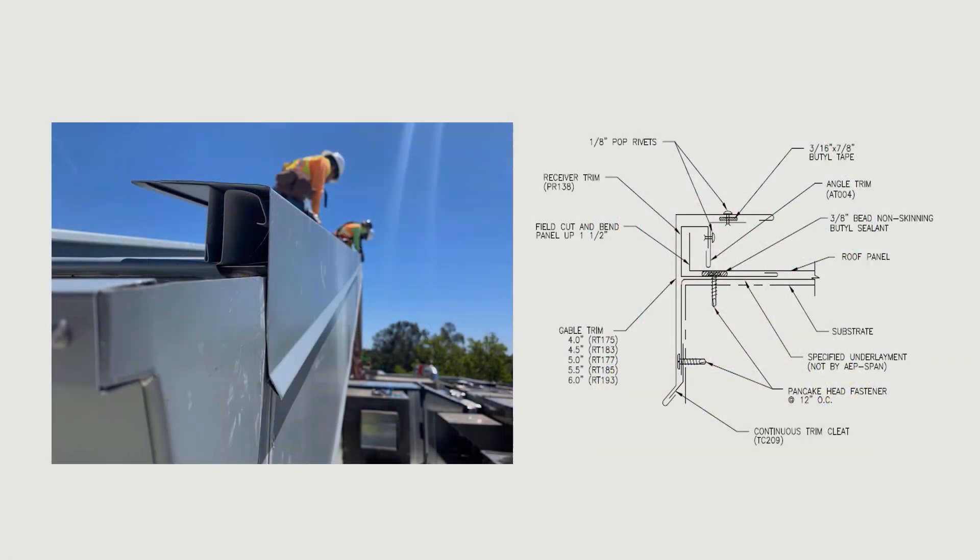Varying panel widths and thermal movement must be considered when detailing full-length roof panels at gable or rake conditions. Installers will typically not be able to use a full-width panel at these locations. Specialized details allow for cutting the panel to the necessary width and field folding the edge, which is then secured into a continuous receiver trim. The panel turn-up and receiver trim provide mechanical waterproofing as well as allowing unrestricted free movement of the panel within the trim.